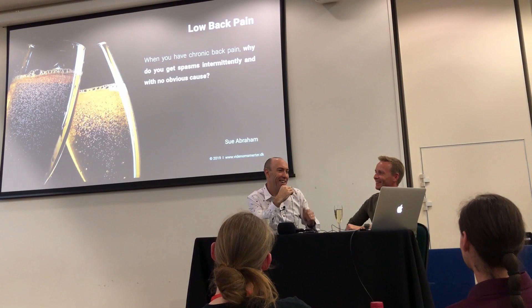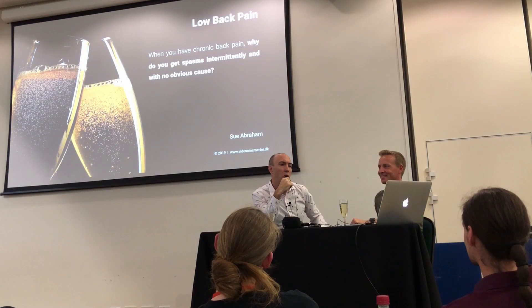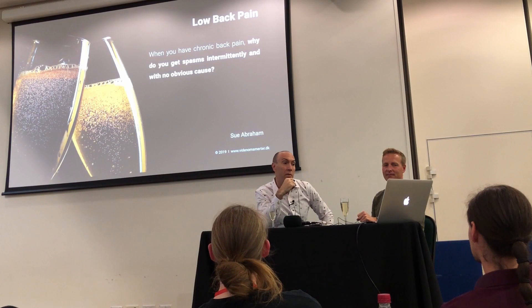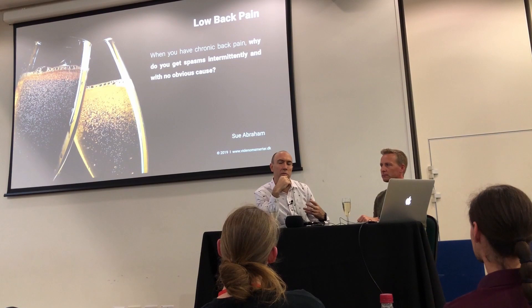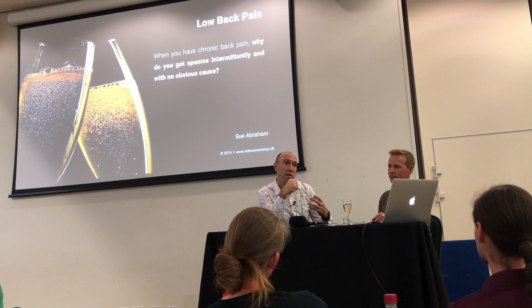The model I would apply to answer that — I would apply the same model if I changed that question to: when you have chronic back pain, why do you get back pain intermittently and with no obvious cause? I'd see muscle spasms as another protective output that reflects an output of the brain, and to some extent an output of the spinal cord — the ventral horn of the spinal cord.